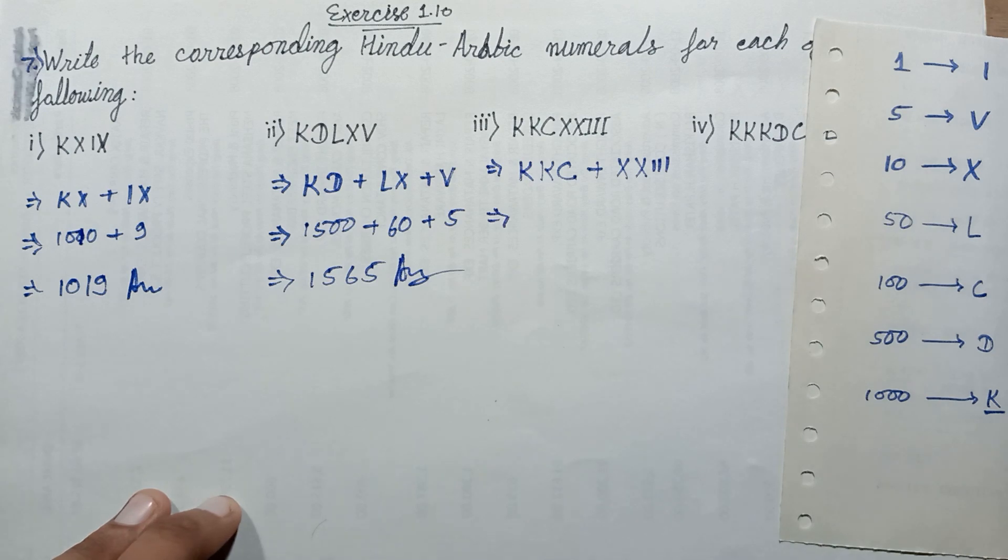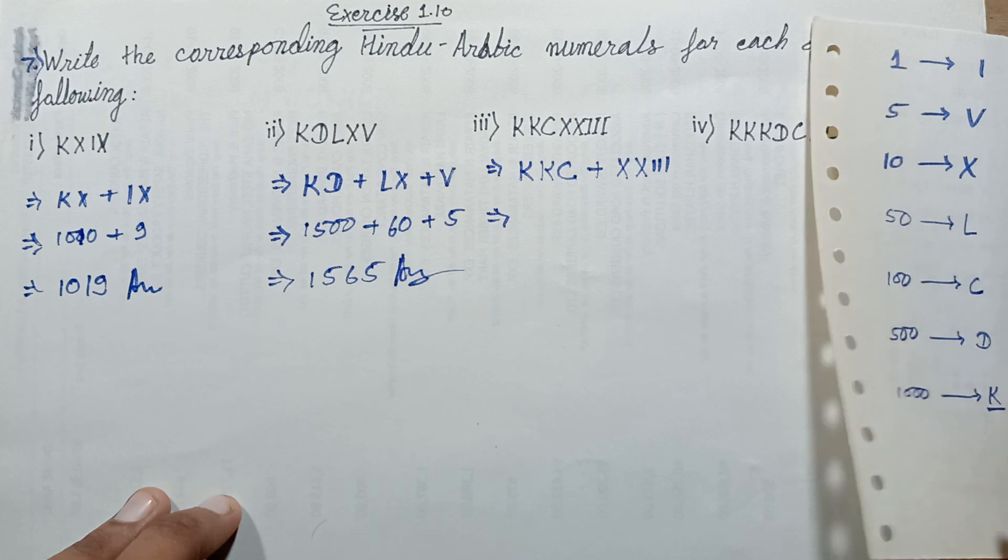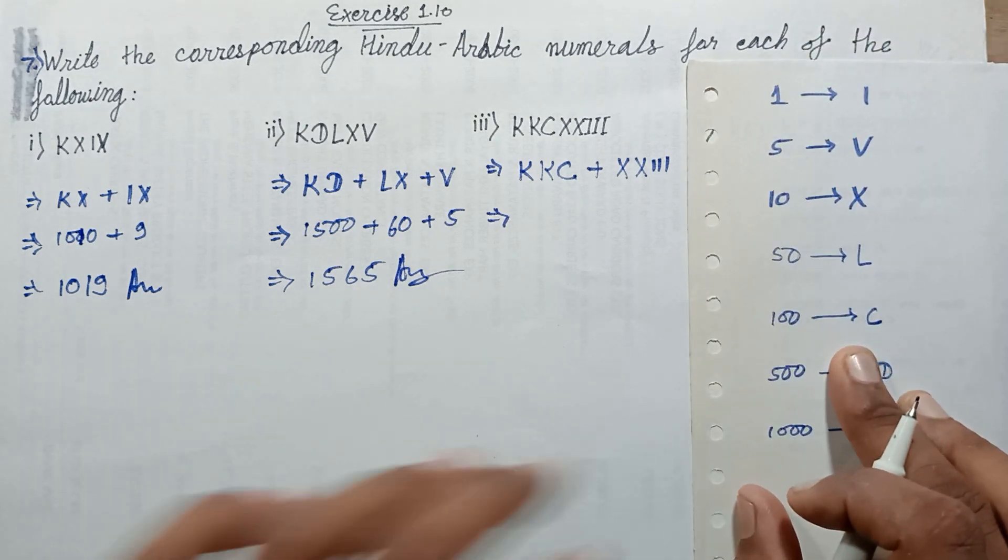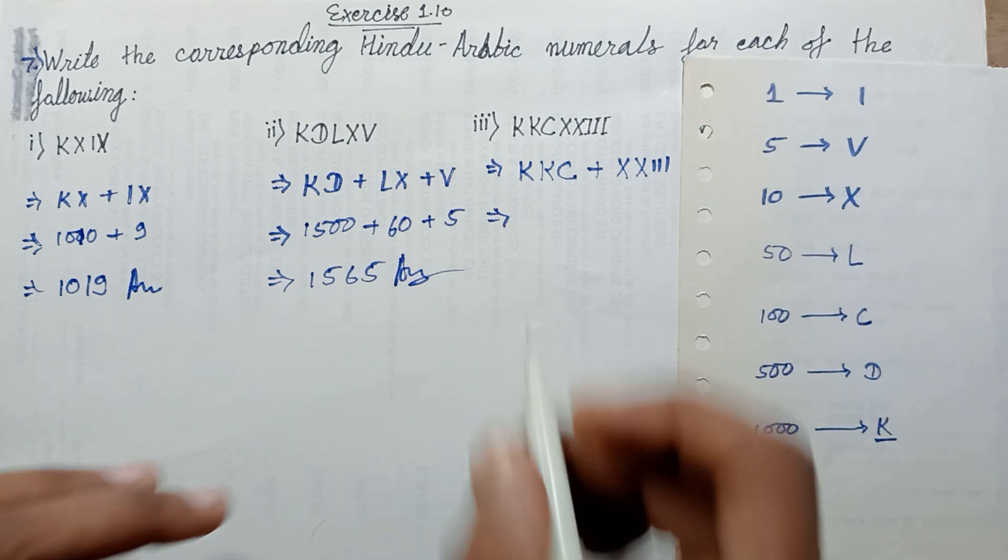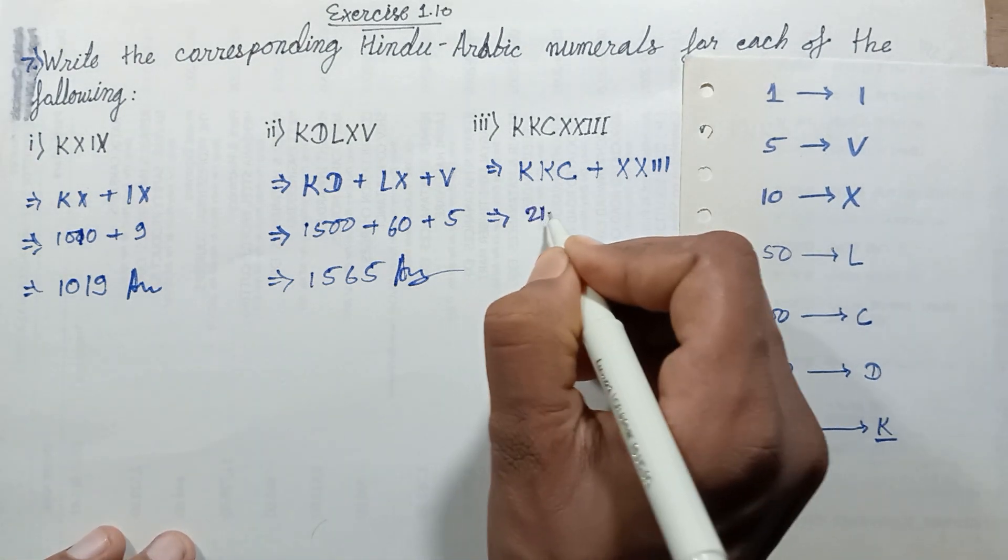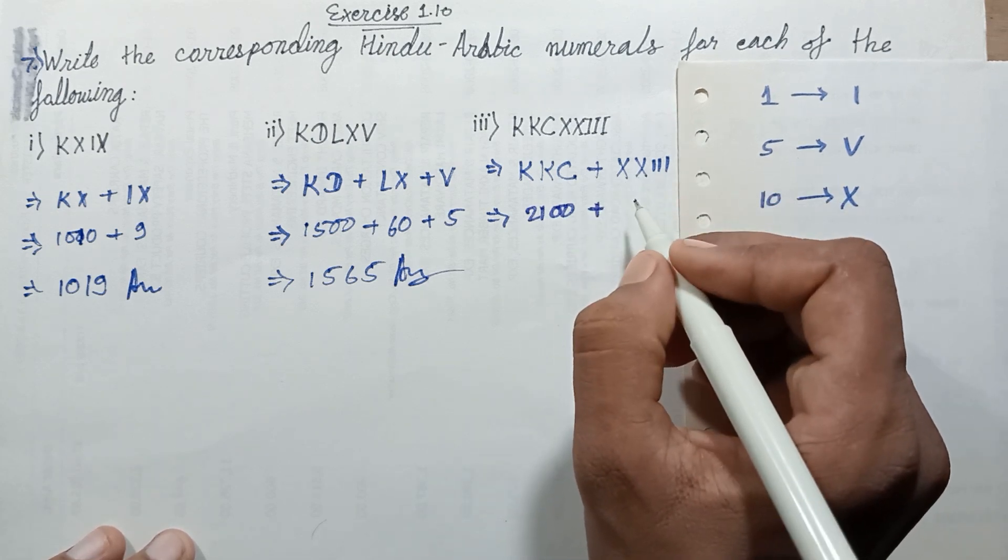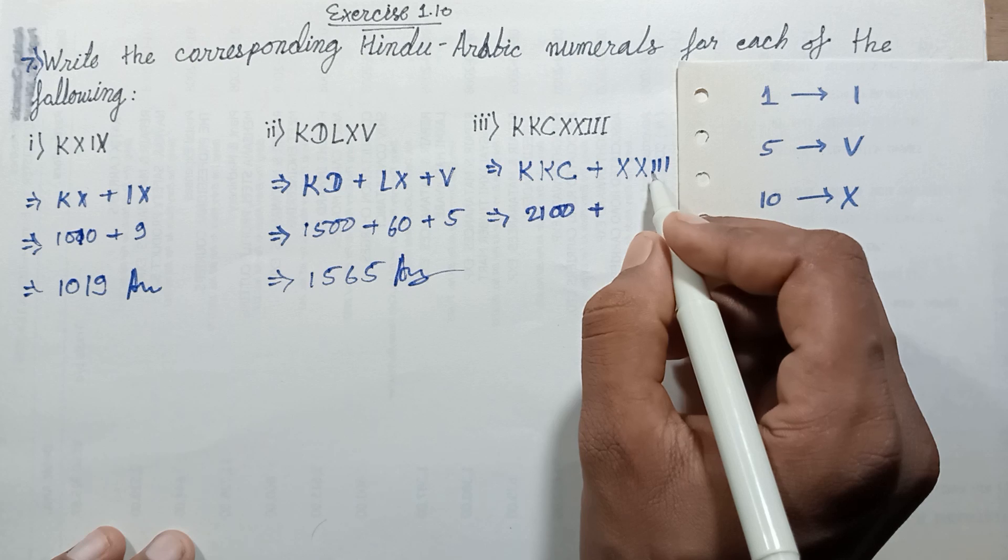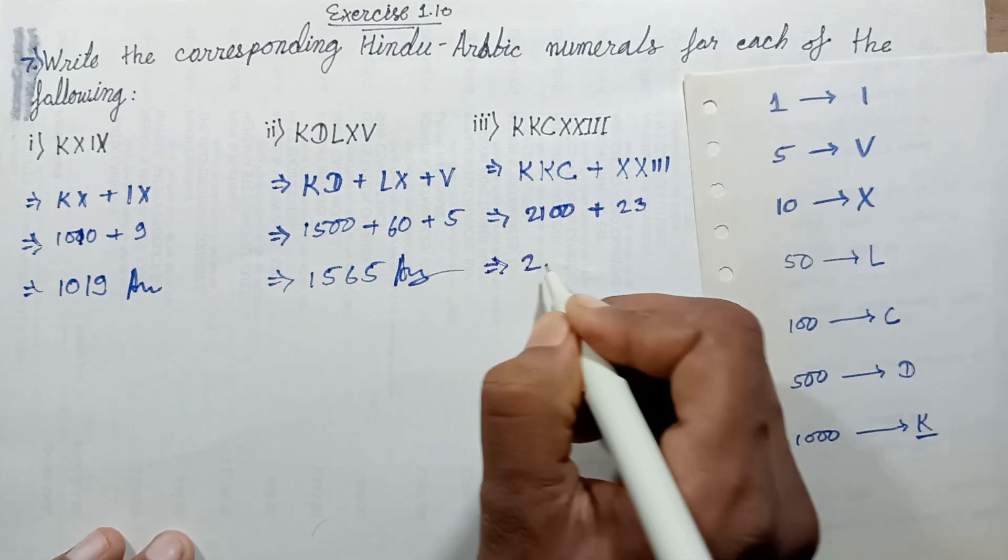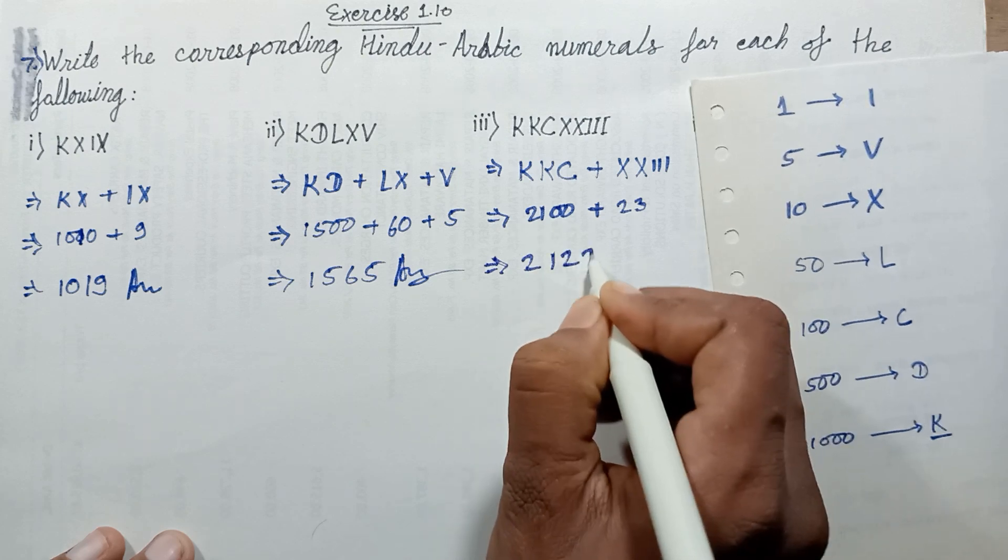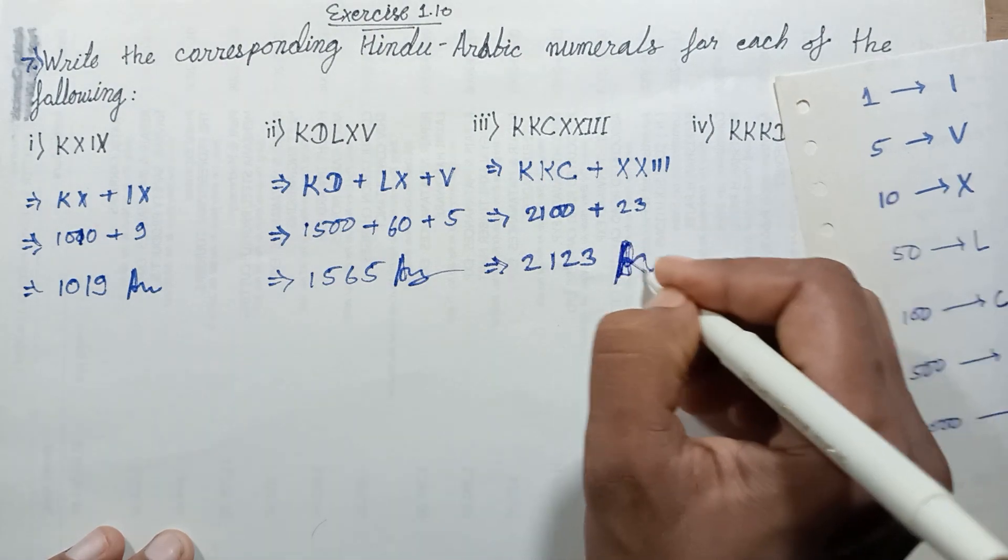Two times K equals two thousand, and one times C equals one hundred. Two thousand one hundred, plus two times X represents twenty, plus three equals twenty-three. Two thousand one hundred twenty-three. This is Hindu-Arabic numerals form.